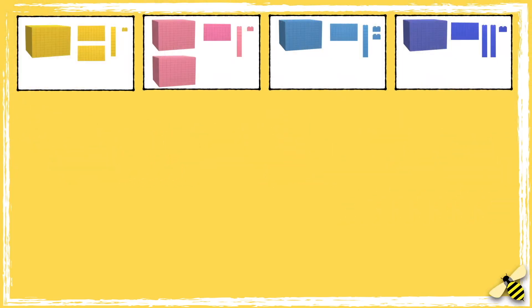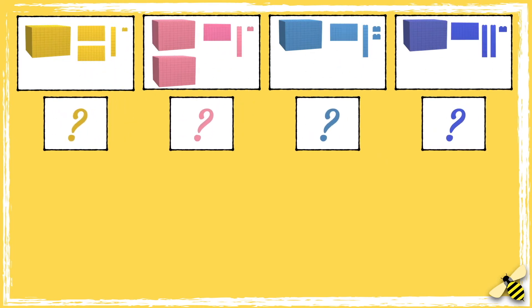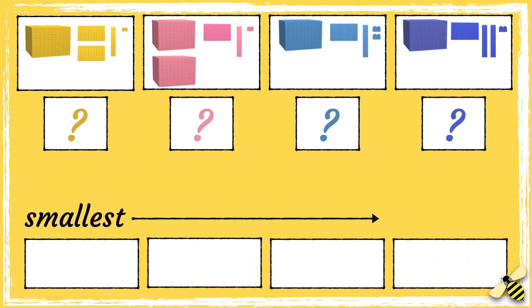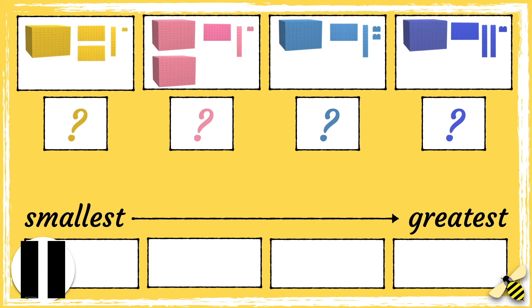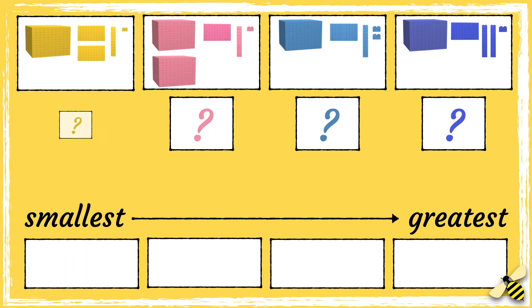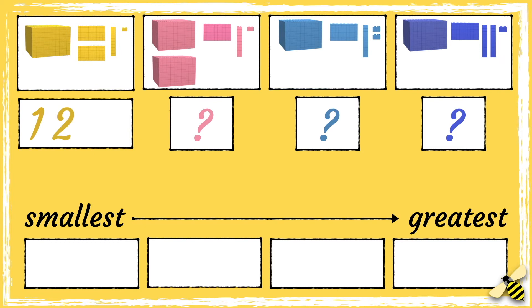Here are four different amounts. How many bricks are in each group? Put them in order from the smallest number to the greatest number. Pause the video to give you time to work out the answer, and press play when you're done.